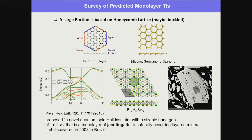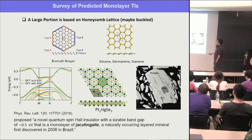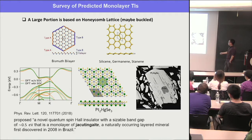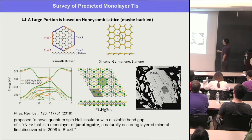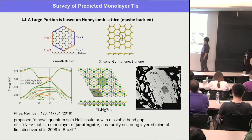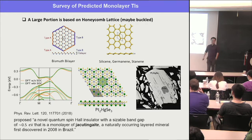I'll give you a more recent prediction from 2018: a naturally-occurring layered mineral — I'll call it 'jackingite' — that was dug from the Earth in 2008, the same year the topological insulator idea appeared. It's predicted as a novel quantum spin Hall insulator with a gap of about 0.5 eV — very large — and nobody has studied it yet. It's layered, and the monolayer has mercury atoms forming a honeycomb lattice.